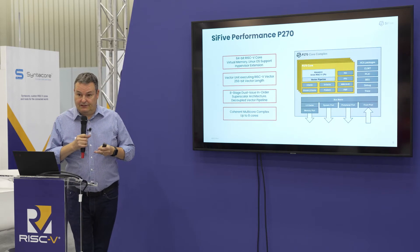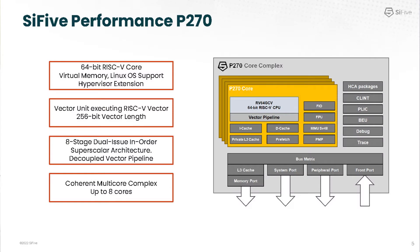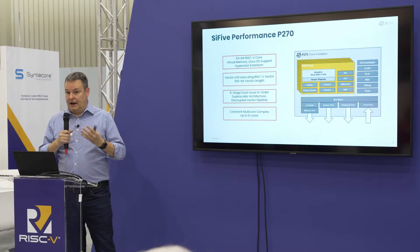The first product I'll mention is the P270. This was launched around the same time as our other product, the X280. These are 64-bit Linux-based systems. The key difference between the P270 and X280 is the vector length — the width of the registers. The P270 is 256-bit, which is the right choice if your system requirements need the smallest possible system while still supporting vectors. It's an eight-stage dual-issue in-order processor, giving very good performance running Linux, and we've architected it to run up to eight cores in parallel in a multi-core system.